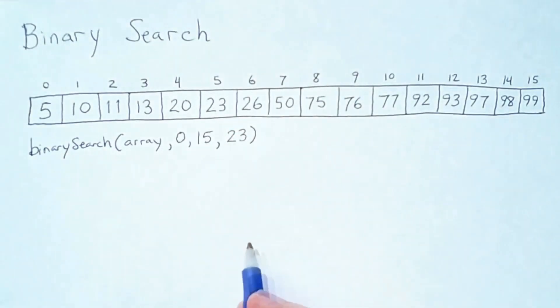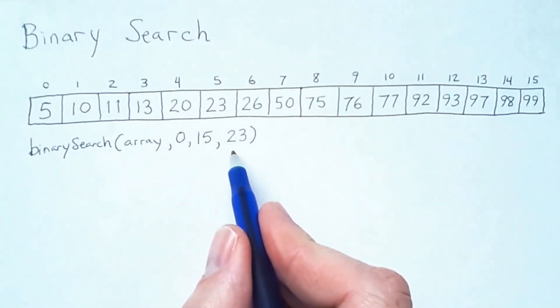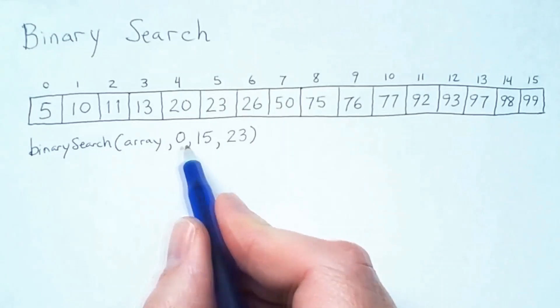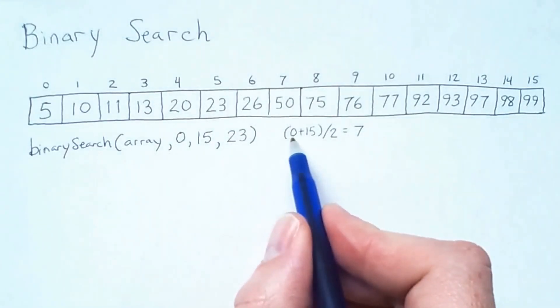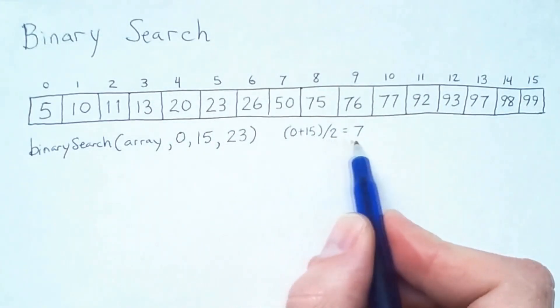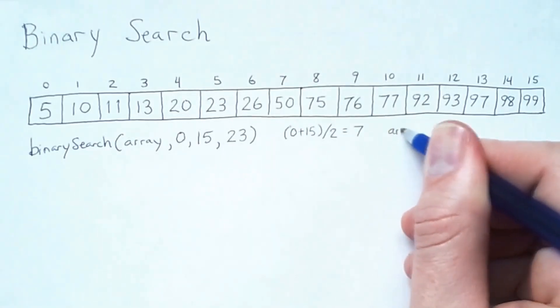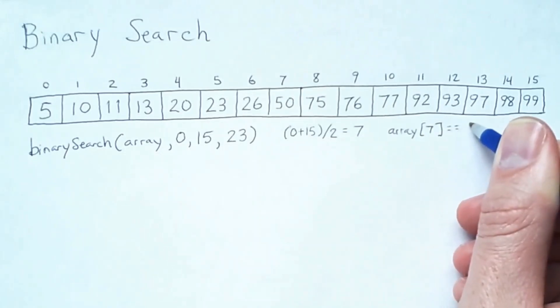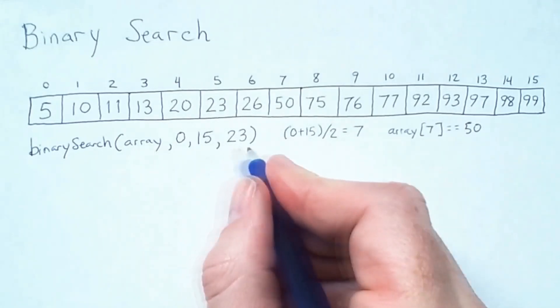Just looking at this array, we can see that 23 is here. But what sequence of recursive calls would lead to 23 being discovered by binary search? The algorithm works by first checking the midpoint of the sub-range defined by 0 and 15. If we're doing integer division, meaning we round down, then the midpoint of this range is 0 plus 15 divided by 2, which is 7. At index 7, we have a value of 50.